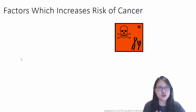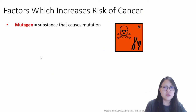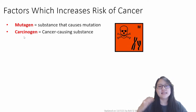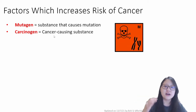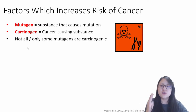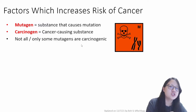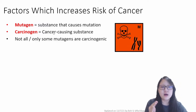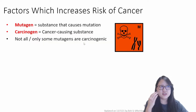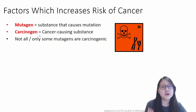What are the factors that increase your risk of cancer? You might have heard these two terms before: mutagen and carcinogen. Mutagens are substances that cause mutations. Carcinogens are cancer-causing substances. There is a slight difference: not all mutagens are carcinogenic, so not all substances that cause mutations cause cancer. Only some mutagens are carcinogenic. In that sense, all carcinogens are mutagens, but not all mutagens are carcinogens.